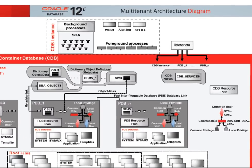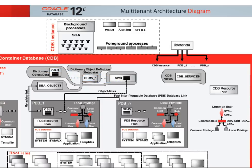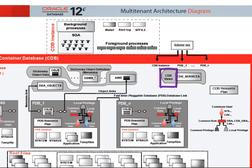At the logical level, the root container also has a data dictionary containing object metadata, stored in tables like OBJ$ or AWR tables, but also dictionary object definitions like DBMS packages and dictionary views. However, a new level of abstraction has been added to the DBA views to have a global view of all container objects. So in addition to the DBA views that now show you what you have in a particular container, we have the CDB views showing information across all containers if you query them from the root.